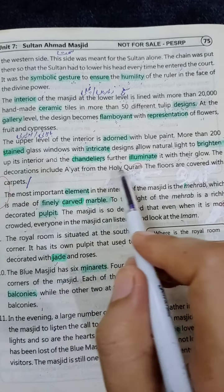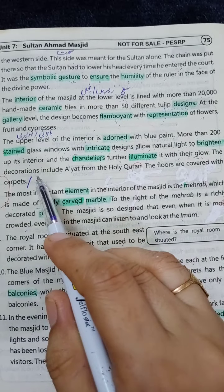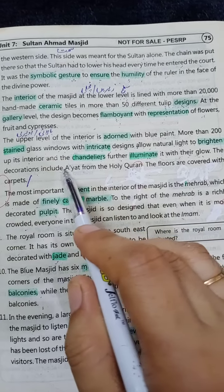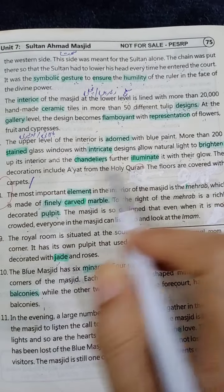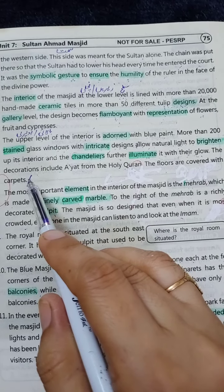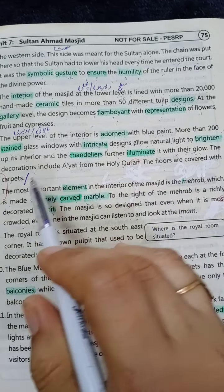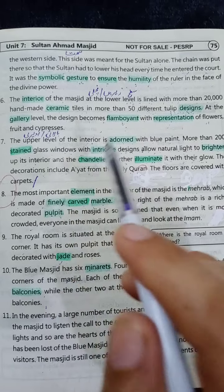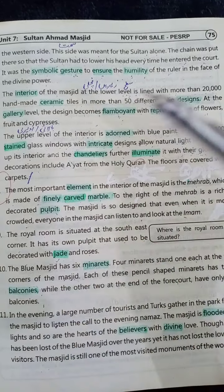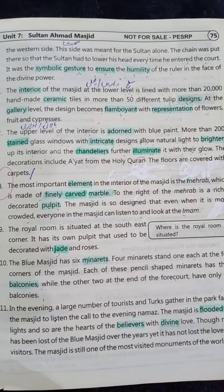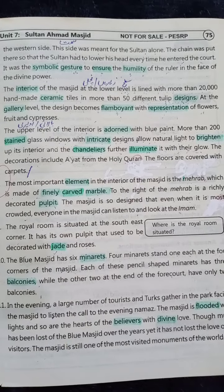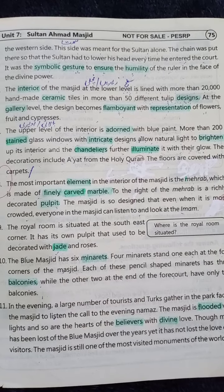The decorations include ayahs from the Holy Quran — سجاوٹی اشیاء میں قرآنی آیات شامل ہیں۔ The floors are covered with carpets — فرش پر قالین بچھائے گئے ہیں۔ Don't follow your guide books — guide books میں اس طرح کی translation نہیں ملے گی۔ Watch the video repeatedly, write and learn, and practice the Urdu Imlaa. Okay, take care.